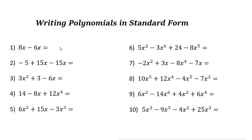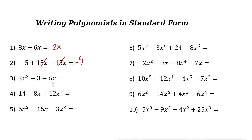When writing polynomials in standard form, you need to simplify them first if possible. For example, here you have 8x minus 6x, so it is just 2x. That's it — we don't have any other terms, just one term. The next one: 15x minus 15x cancels out, and the answer is just negative 5.